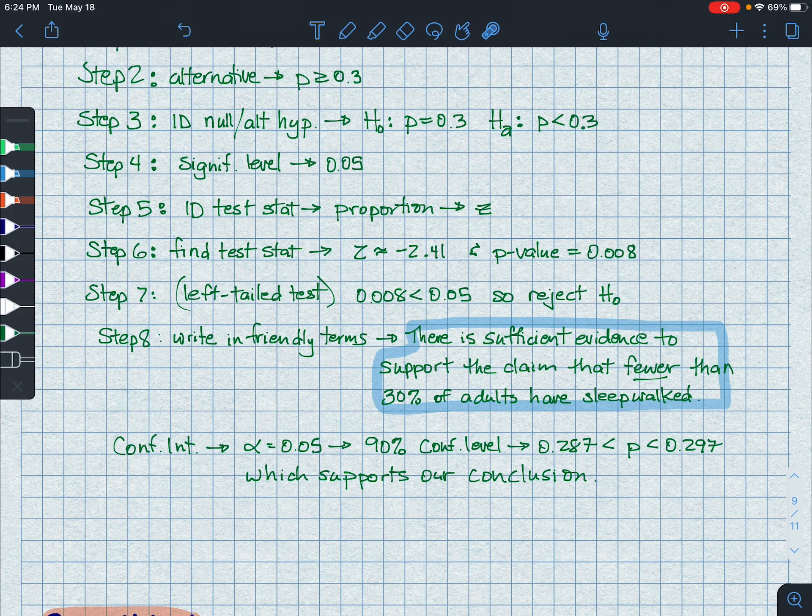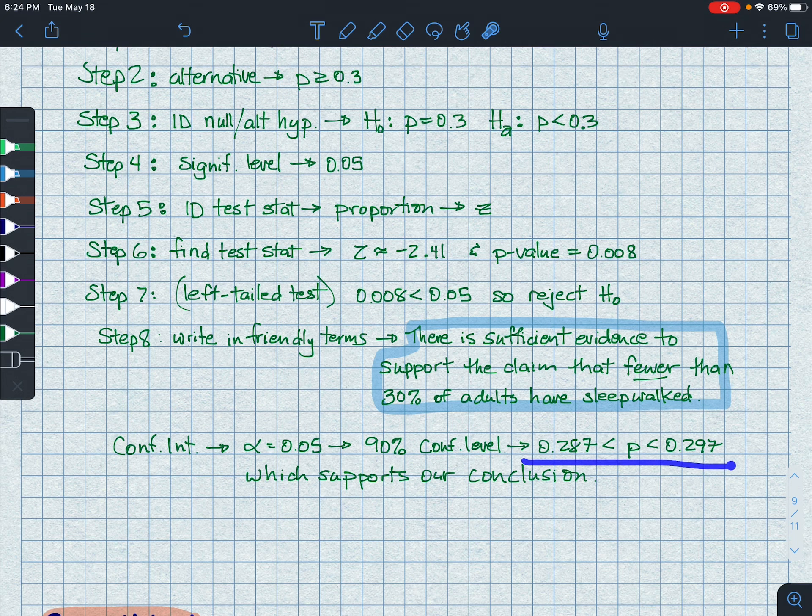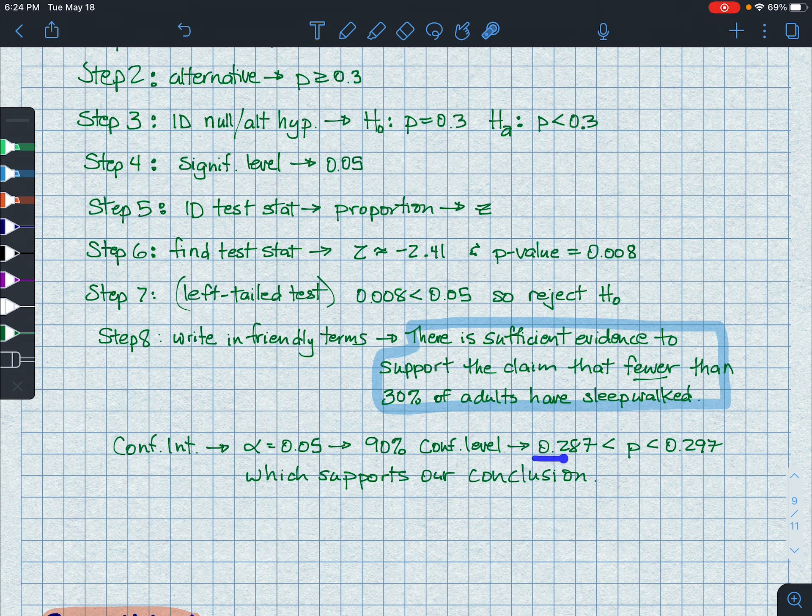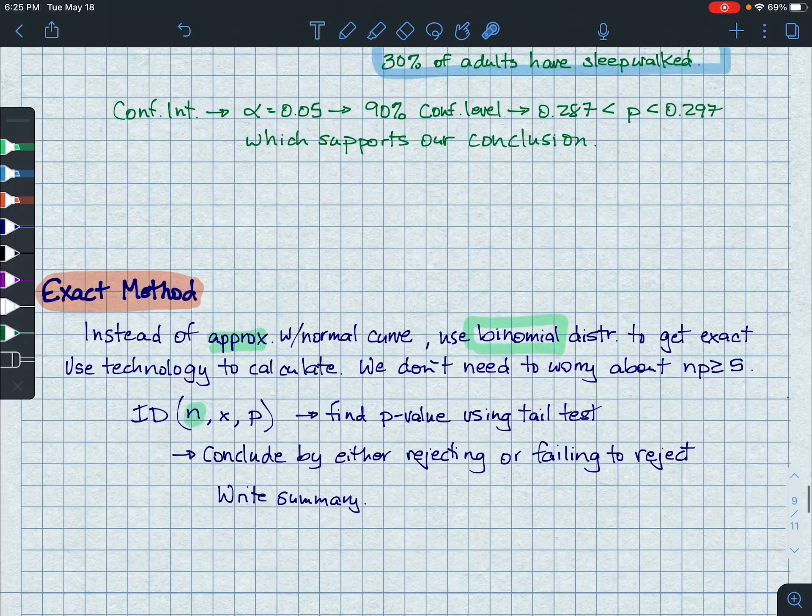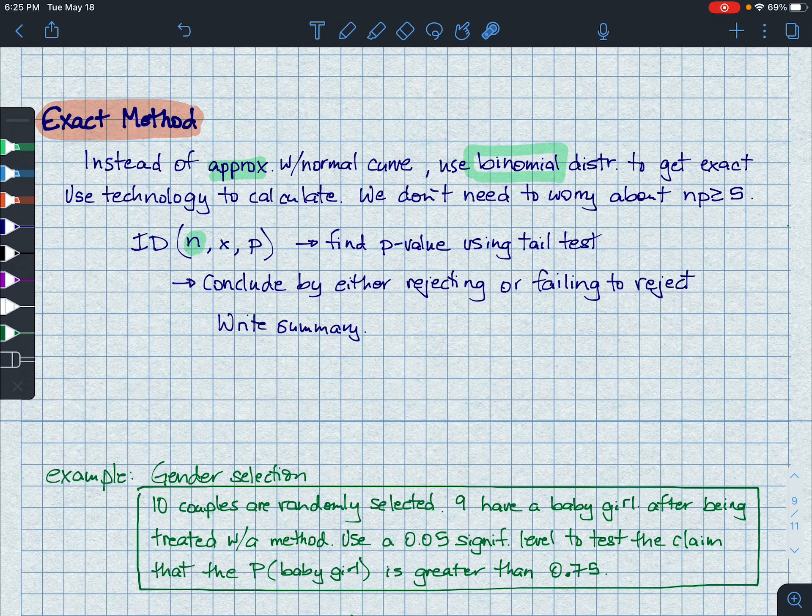All right. And again, if I look at the confidence interval with that alpha and our 90% constraint, then we get an interval that both limits are below 30%. So we're confident that the proportion for the population is also less than 30%.